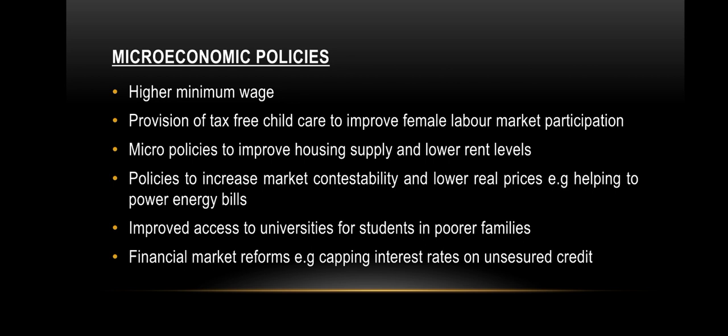Previously we discussed macro-level policies. Now at the micro level, policies can be implemented for individuals, families, or households. Higher minimum wage — the wage rate should be increased; if a minimum wage of 10,000 is fixed, it needs to be raised in line with inflation so that workers can complete their basic needs and fulfill their consumption level. Other micro policies include provision of tax-free childcare to improve female labor market participation, improving housing supply and lowering rent levels, and policies to improve markets such as lower real prices.